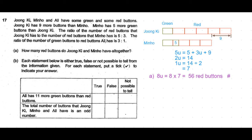Part B: each statement below is either true, false, or not possible to tell from the information given. Put a tick to indicate your answer. The first statement is: Ali has 11 more green buttons than red buttons. The ratio of green to red buttons for Ali is 3:1, so we have three units of green and one unit of red. The difference is two units, which must be an even number — it cannot be odd. Since 11 is odd, the statement is false.